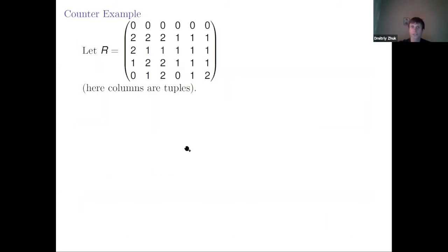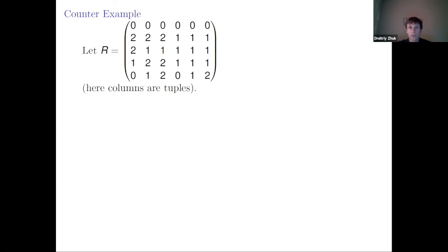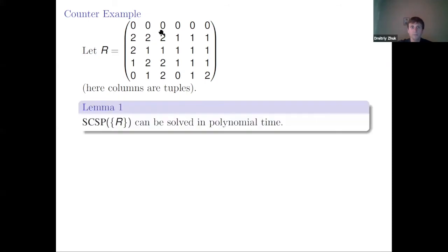Now I want to show this counterexample because it is really simple. We have just one five-ary relation: the first variable is always zero, the next three variables are always from {1,2}, and the last variable can be anything. I claim that surjective CSP over R can be solved in polynomial time. We know that CSP over R with all constant relations is NP-hard, which is known from general CSP theory.